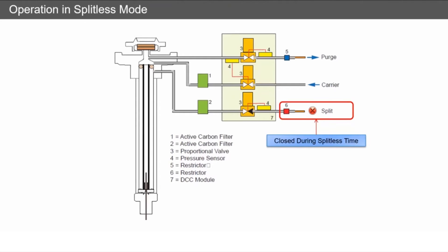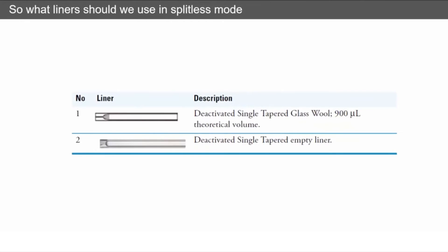Typical liners we're going to use: a single tapered liner to focus everything onto the column. Depending on whether we're doing hot needle injection or cold needle injection, we'll have glass wool or not. Typically these liners have a volume of about 1 mL, so we've got good volume.